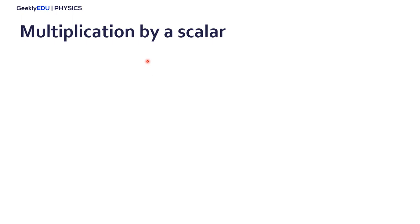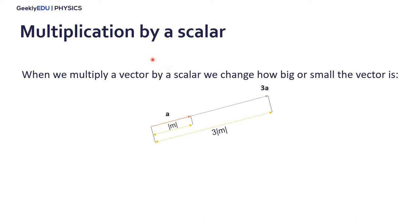We can also multiply a vector by a scalar. And when we do it, we change how big or small the vector is. For example, we have vector a, the magnitude is n. If we multiply it by 3, we just multiply the magnitude of the vector by 3.